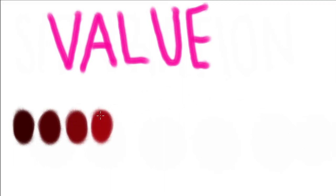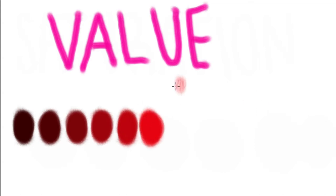Value is the darkness or lightness of a color. A good way to understand value is to look at a value scale, which I will demonstrate now. Using the color red, I'm putting a very dark burgundy, which is a darker hue of red, and you can see the color getting lighter and lighter as I do these shades.